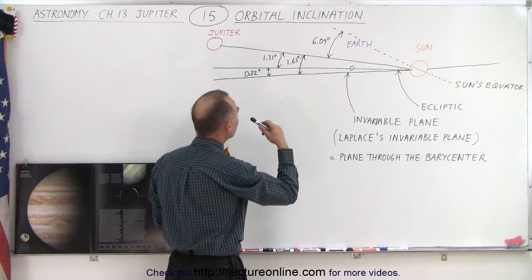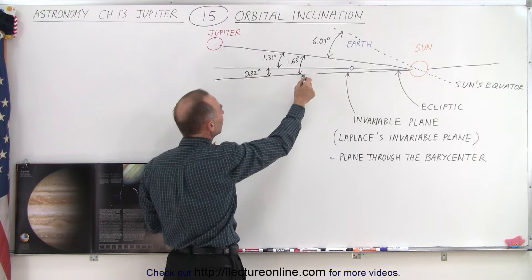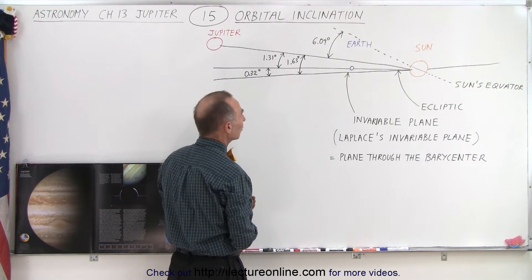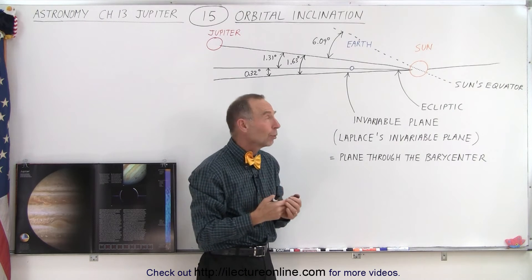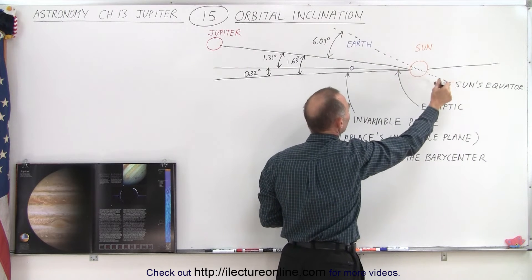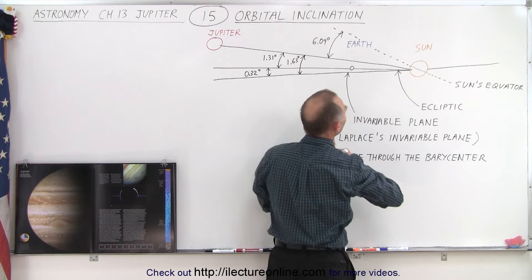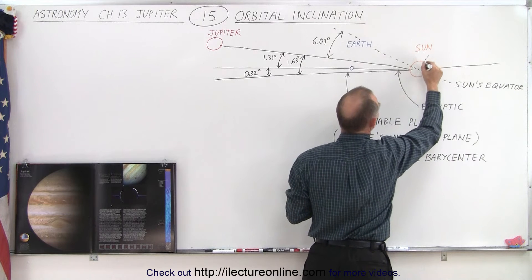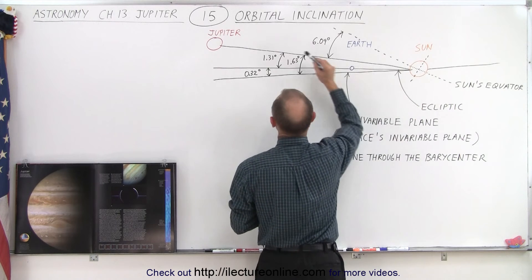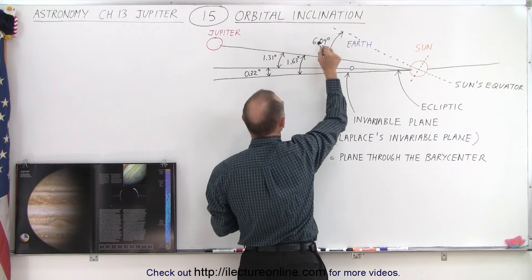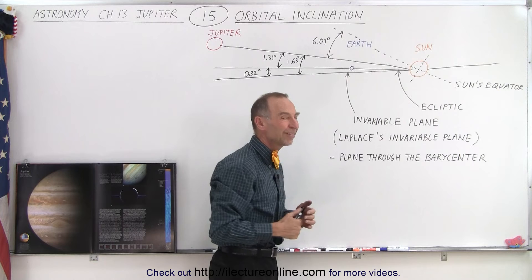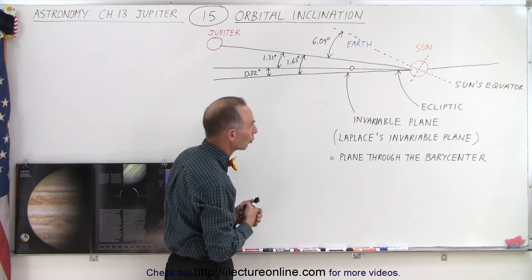The angular distance from Jupiter to the invariable plane is 1.63 degrees. Then there's a third reference point, which is the Sun's equatorial plane. The Sun spins around its axis, and the Sun's equatorial plane is perpendicular to that rotational motion of the Sun. Relative to that plane, the orbit of Jupiter is 6.09 degrees away, and the Earth will therefore be slightly over seven degrees away from that equatorial plane of the Sun.